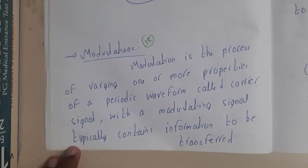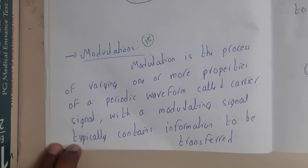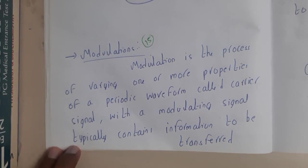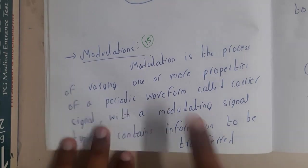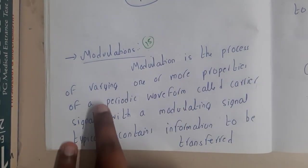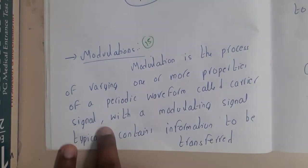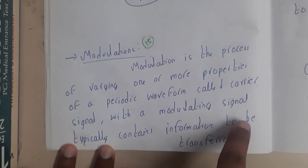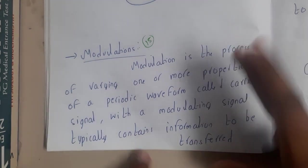Hello guys, we are back with our next lecture. In this lecture, let us go through the concept of modulation, and in the next lectures we will be discussing different types of modulations in detail. Modulation is a process of varying one or more properties of a periodic waveform called a carrier signal with a modulation signal, typically called the information to be transferred.